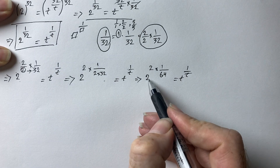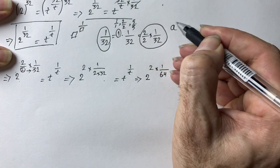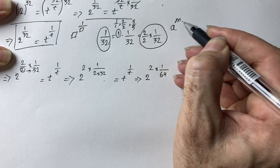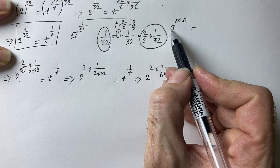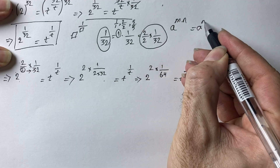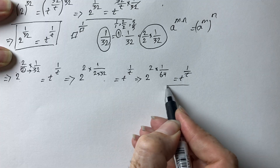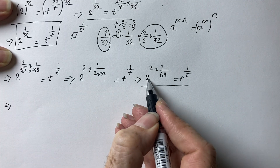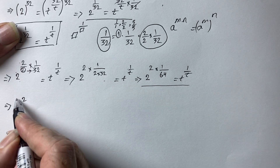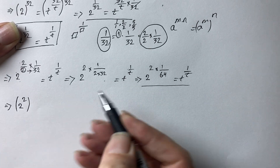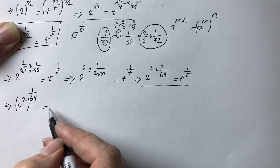Recall that a to the power of m times n can be written as a to the power of m raised to the power of n. So the left hand side becomes 2 to the power of 2, raised to the power of 1 over 64, which equals the right hand side t to the power of 1 over t.